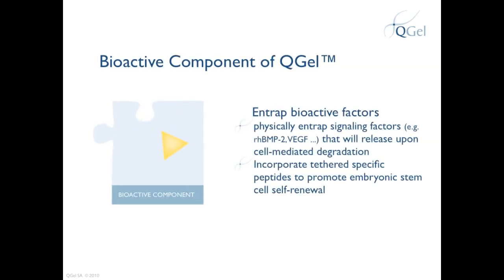Although not incorporated in Q-Gel products as a standard, you have the possibility to incorporate a bioactive component within the Q-Gel matrix. Examples in the literature include the incorporation of RhBMP2, VEGF, and tethered specific peptides to guide embryonic stem cell behaviour. References to these articles and more can be found in Q-Gel's product documentation, downloadable from Q-Gel's website.